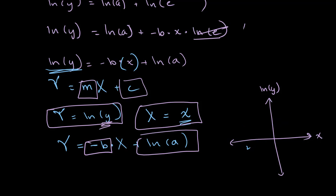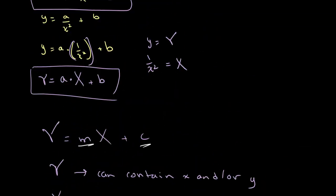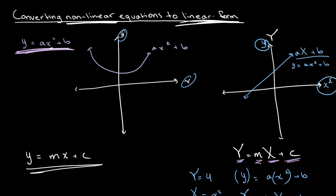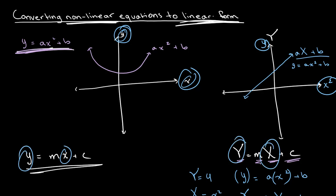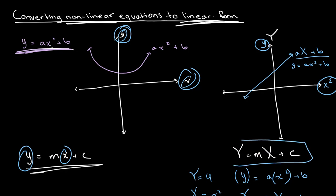As a quick recap: when you want to convert nonlinear equations into linear form, all you need to do is change the values of your axes. Instead of using y and x, you use capital Y and capital X in order to move your equation into the form Y equals mX plus C.